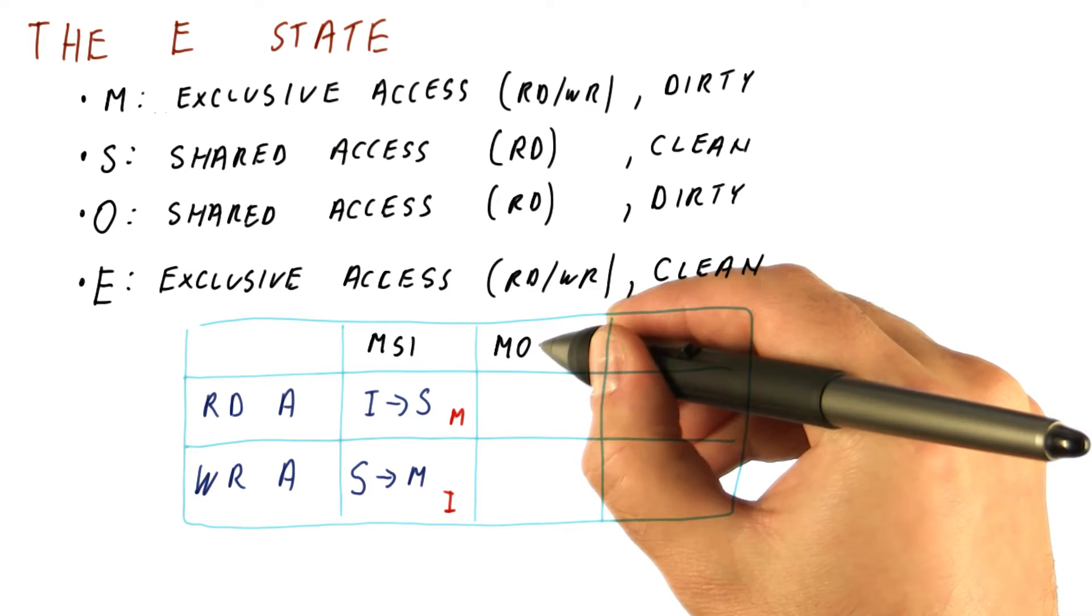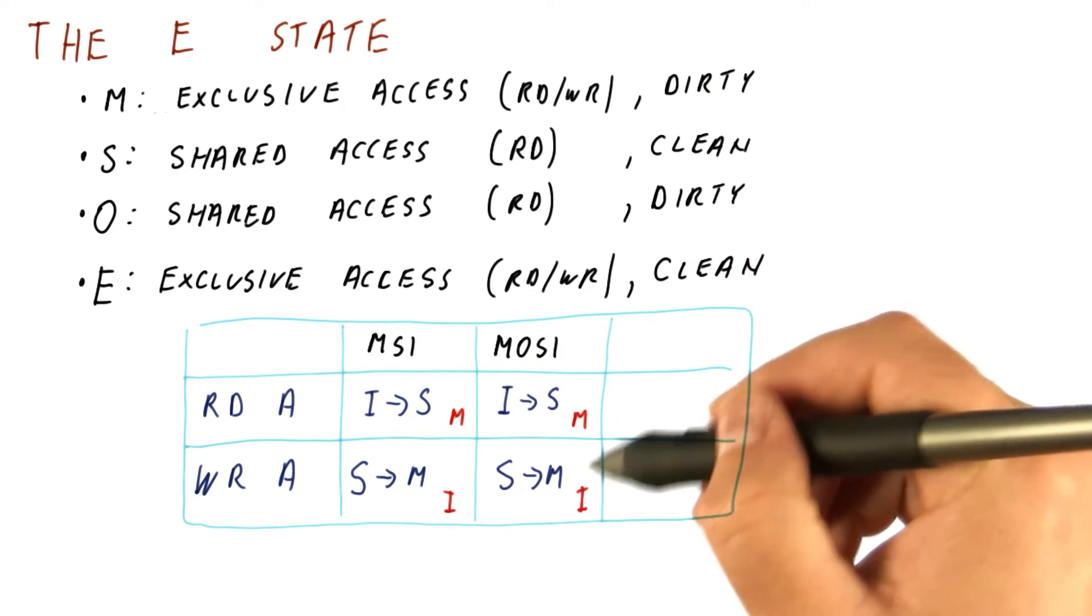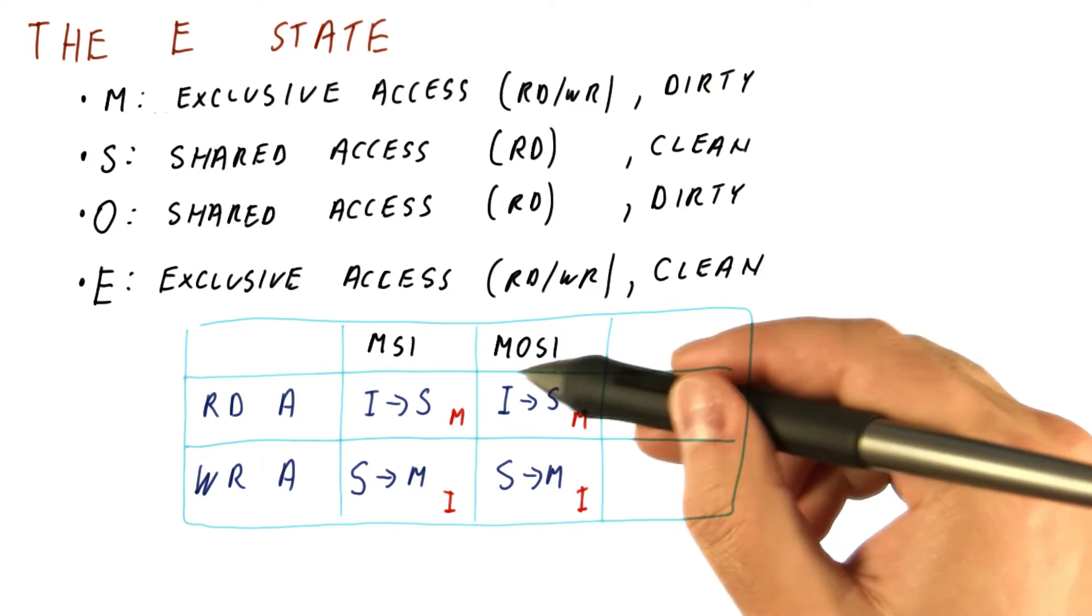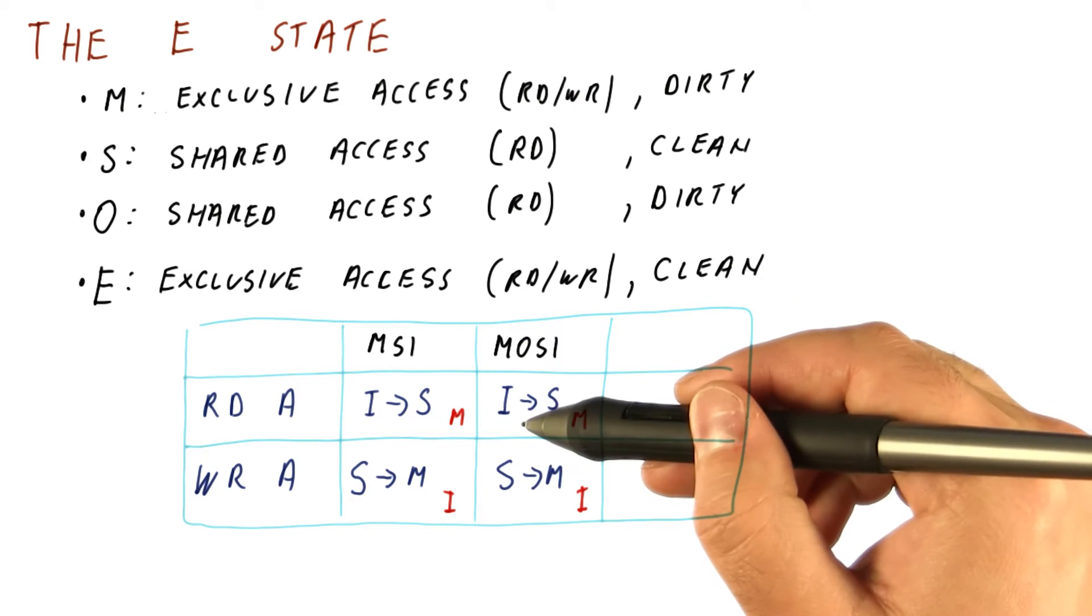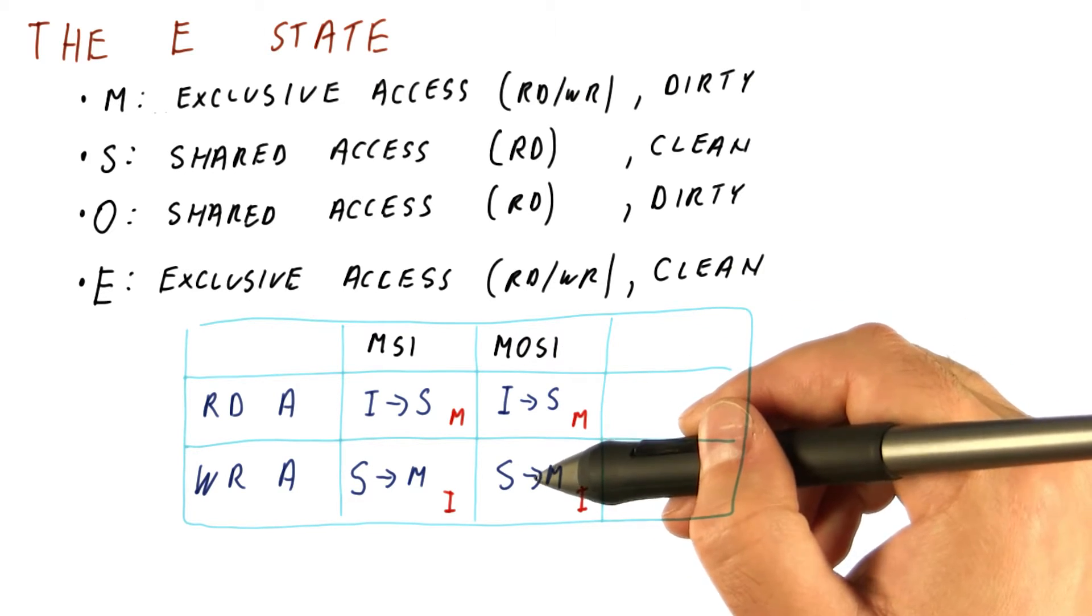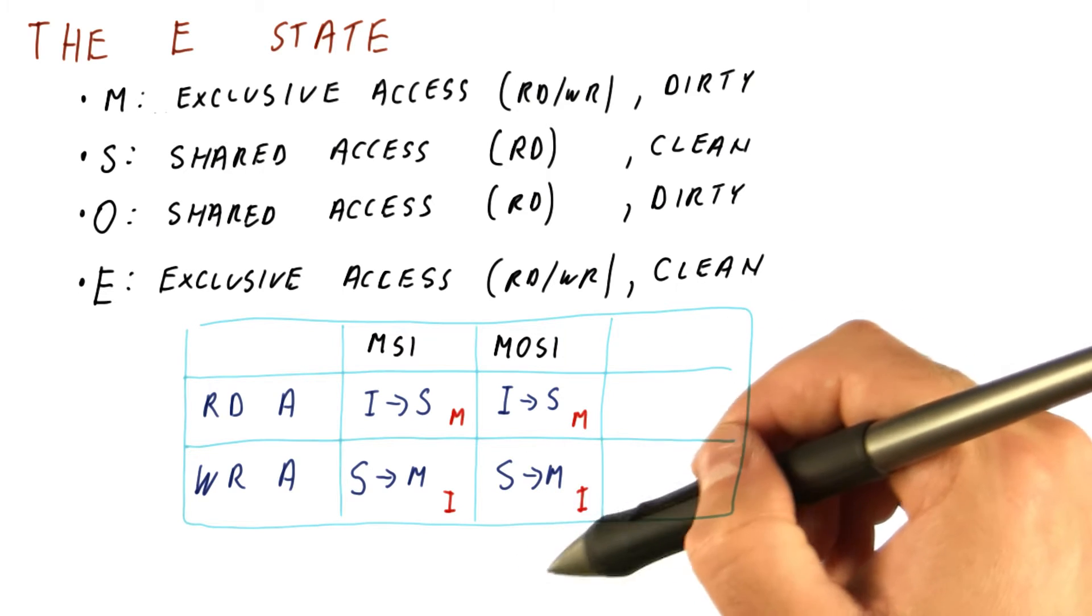If we have the MOSI, we have the same sequence because really the O state is not helping us here. It's helping us save memory accesses after we have the write and others start reading.